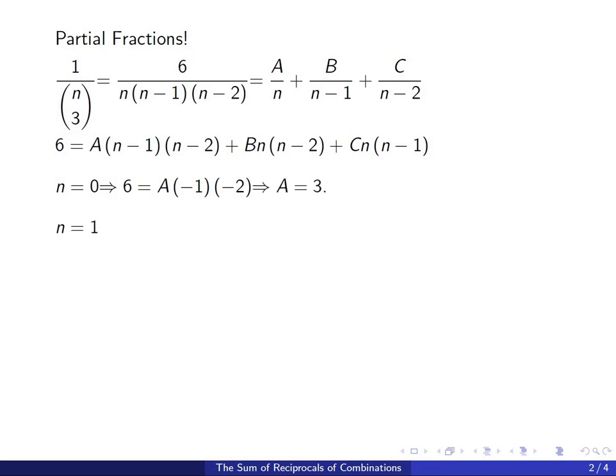If you plug in n equals 1, that kills the first and the third term which means 6 equals b times 1 times 1 minus 2 which means b is negative 6.